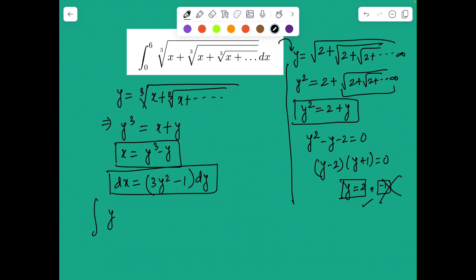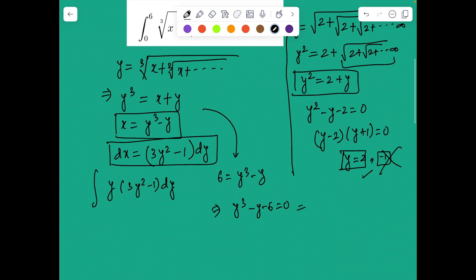It's converting everything in the world of y. So that gives you y times dx is replaced with 3y squared minus 1 dy. Now the trap of the problem is here. The upper limit is 6, so x equals 6 will give y cubed minus y which evaluates to y cubed minus y minus 6 equals 0.